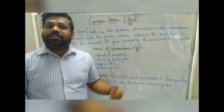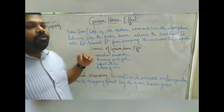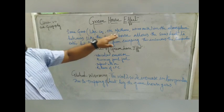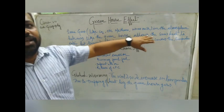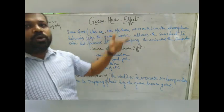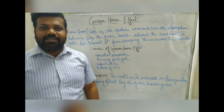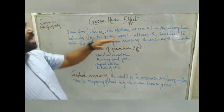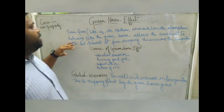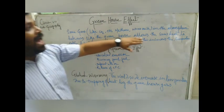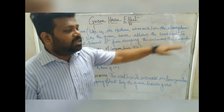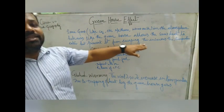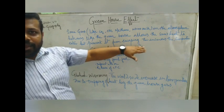So let's see what is the Greenhouse Effect. Some gases like carbon dioxide, CFC, methane, and nitrous oxide are also called greenhouse gases because they trap heat. These gases in the atmosphere behave like a greenhouse — they allow the sun's heat to enter but prevent it from escaping.